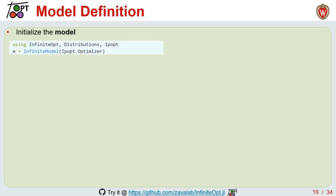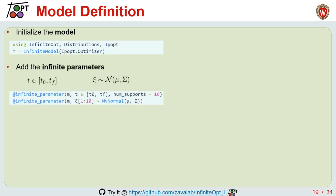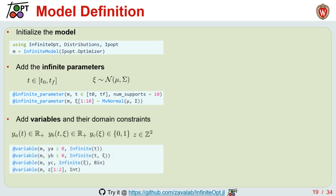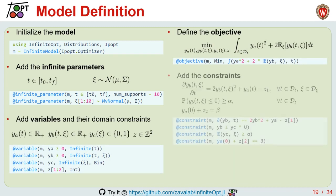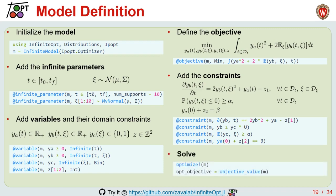Bringing these modeling elements together, we can define a model by initializing an infinite model, adding infinite parameters with their associated information, adding decision variables with their associated properties, defining the objective function — even one that involves complex measures, compactly expressed — defining constraints such as DAE, chance, and point constraints very compactly with our syntax, and then solving it by simply calling optimize and letting InfiniteOpt take care of the rest.